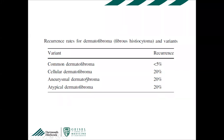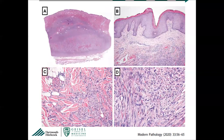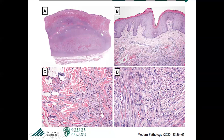The classic dermatofibroma has a local recurrence rate of less than 5%, but there are subtypes with a higher local recurrence of about 1 in 5. We'll talk about the cellular subtype, the aneurysmal, and the atypical. Starting with cellular dermatofibroma — which can create problems — this case is very well circumscribed with an expansile appearance, epithelial hyperplasia, and lateral entrapment of collagen bundles at the periphery.